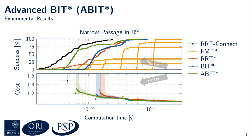Because there is a random component to these sampling-based algorithms, we need to look at statistical results. These plots show the performances of RRT-Connect in black, FMT* in yellow, RRT* in red, BIT* in blue, and A-BIT* in green on the narrow passage problem. Each planner was run 100 times for 0.2 seconds. The top plot shows the percentage of successful runs over time, and the bottom plot shows the median solution costs with 99% confidence intervals. The lines show the median costs over time and the dots show the median costs and times of the initial solutions. We can see that A-BIT* is faster than the other tested asymptotically optimal planners. The only planner faster than A-BIT* is RRT-Connect, which is not an anytime algorithm and cannot improve its solution given more computation time. FMT* is also not an anytime algorithm and requires the user to specify the number of samples in advance; I ran several instances with various numbers of samples, which is why there are multiple yellow lines in these plots.